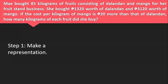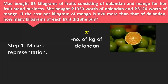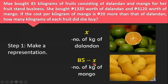Let's do the first step, which is to make a representation. We'll use the variable x as the number of kilograms of dalandan. This implies that if there are x kilograms of dalandan, then 85 minus x represents the number of kilograms of mango. We subtract x from 85 because the overall fruit total is 85 kilograms, so we subtract the dalandan's kilograms to find the remaining kilograms for mango.